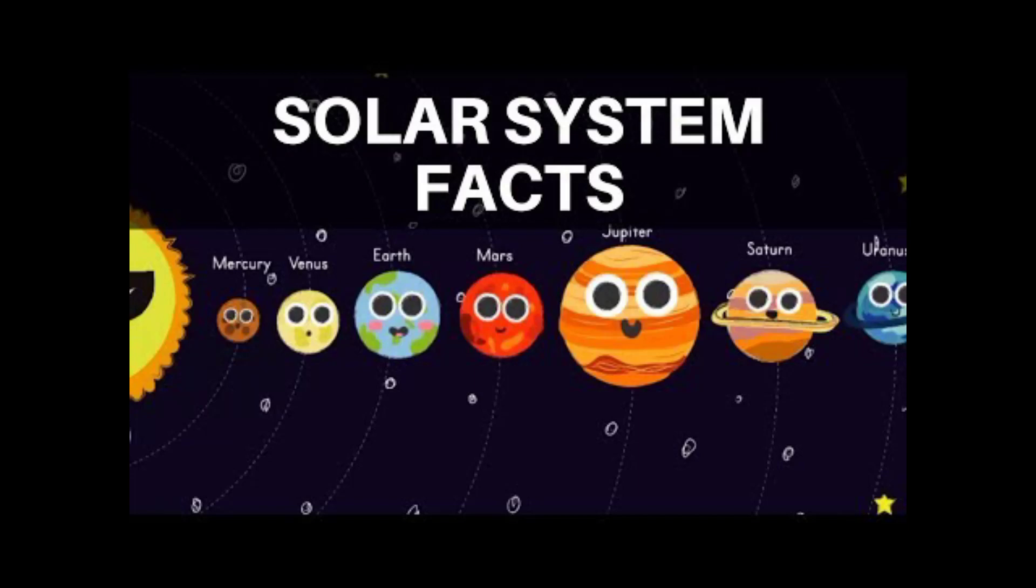What is the solar system? The sun and the celestial bodies which revolve around it form the solar system. It consists of a large number of bodies such as planets, comets, asteroids, and many other celestial bodies.